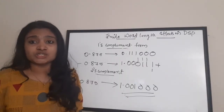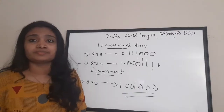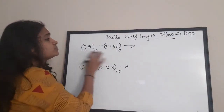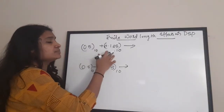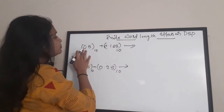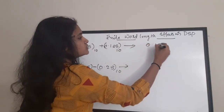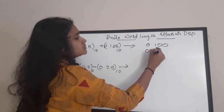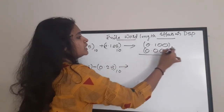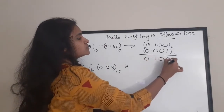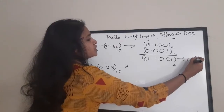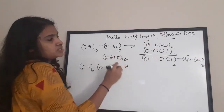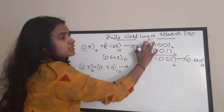Now let us see how addition and subtraction is done in fixed point number representation. To add two numbers, convert them to binary and add. The binary format of 0.5 is 0.100 and for 0.125 it is 0.001. Adding these two numbers gives 0.1001, which indicates 0.625 in decimal. So the answer is 0.625.